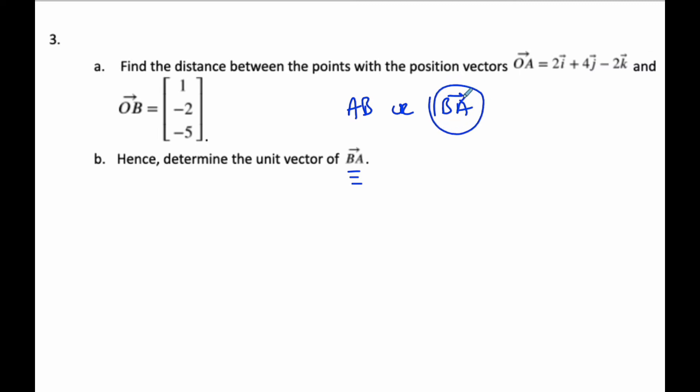So BA means I'm going to take the head, which is A, subtract the tail, so BA vector is equal to 2 minus 1, 2 minus 1 is 1, 4 minus a negative 2 is 6, and negative 2 subtract the negative 5, so negative 2 plus 5 is 3.